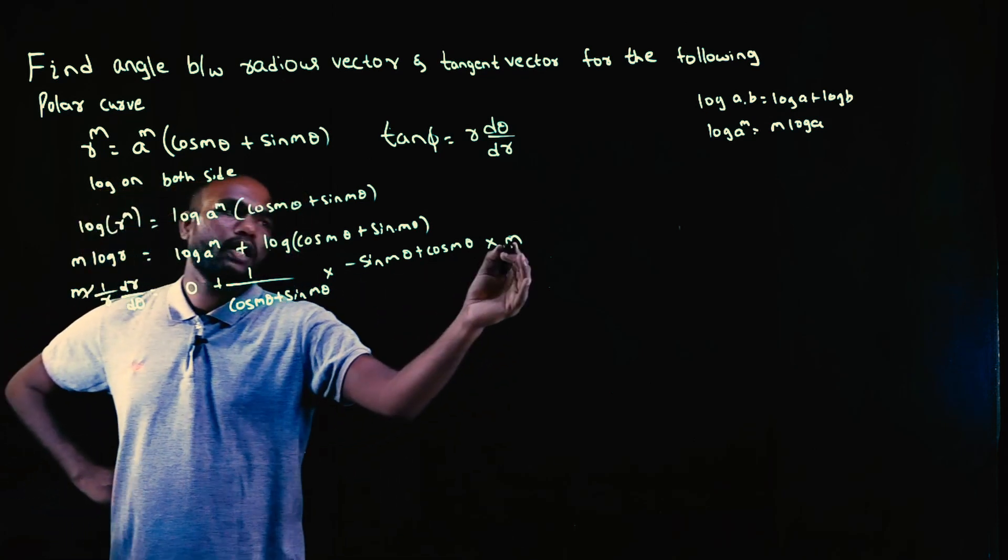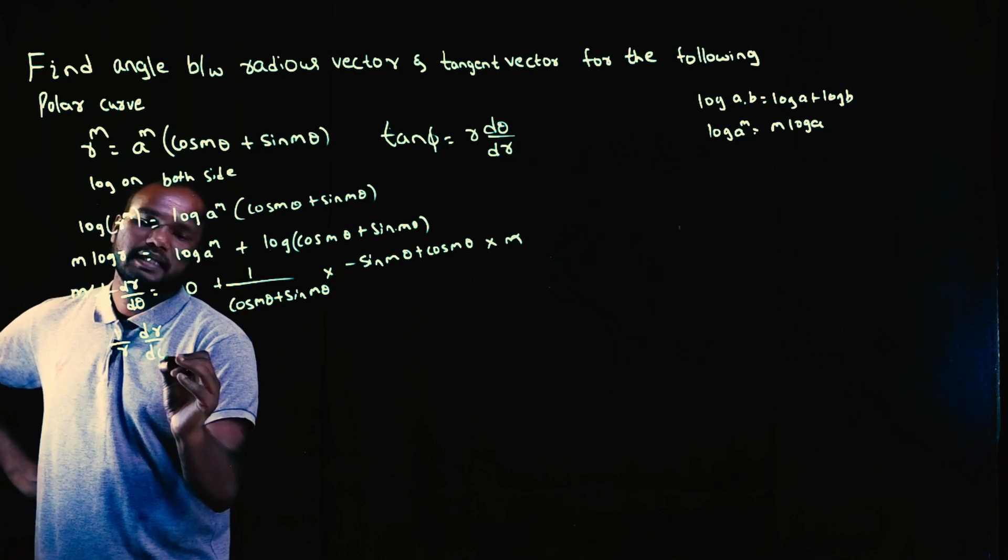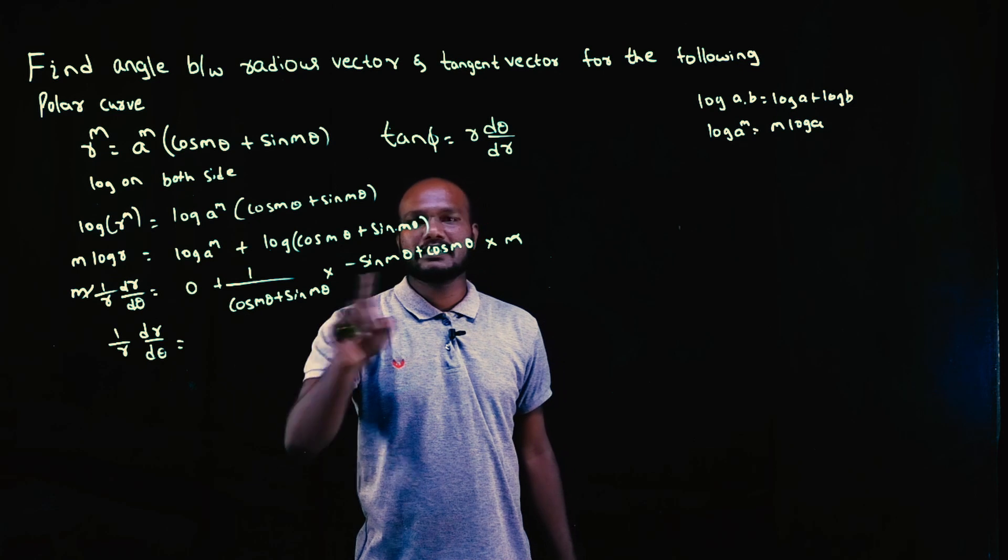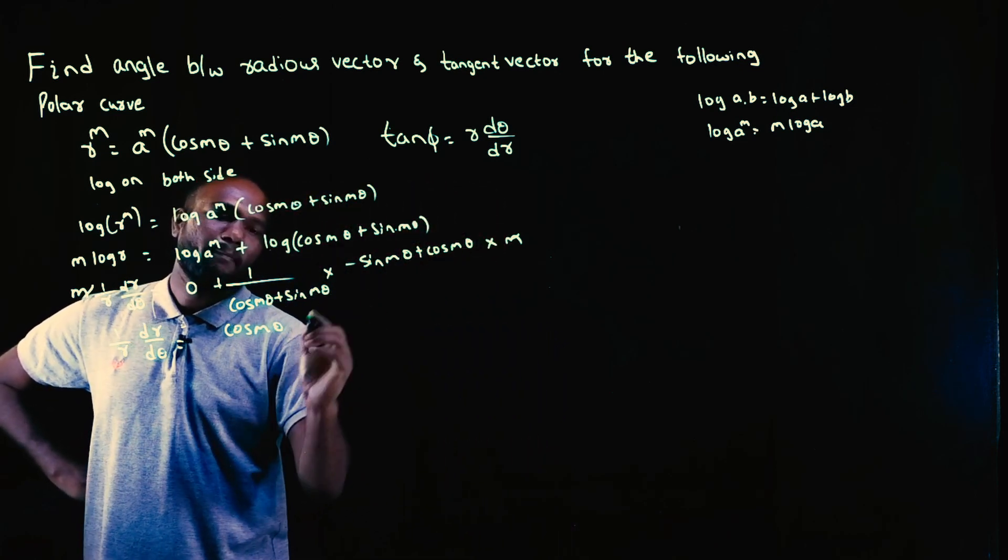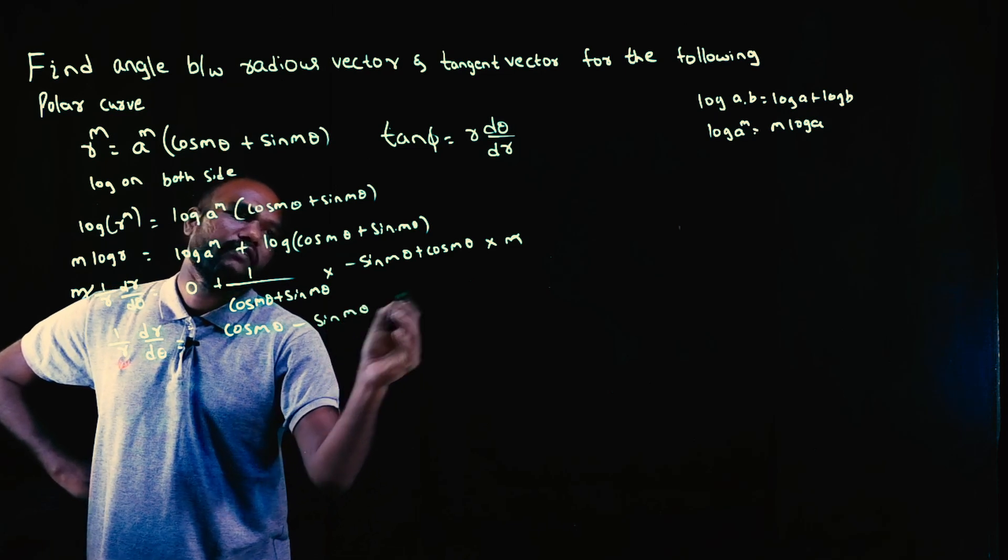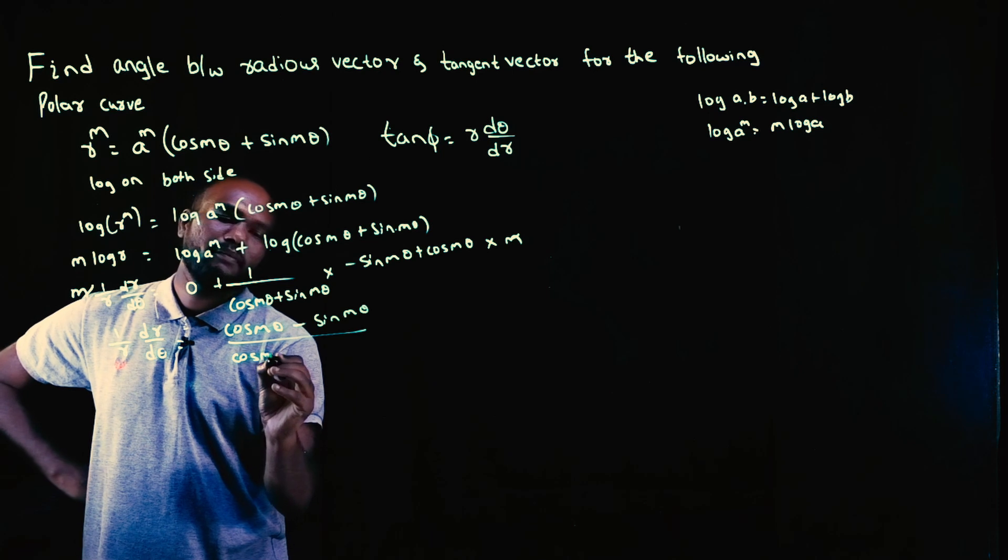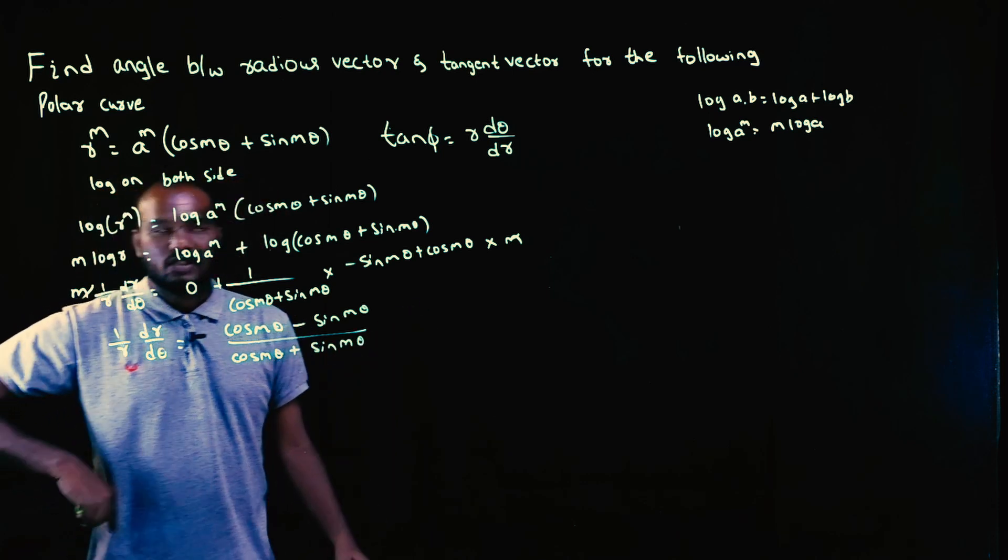Taking out the m terms, I get (1/r)(dr/d theta) equals m times (cos m theta - sin m theta)/(cos m theta + sin m theta). But I do not want 1/r. I need r times d theta/dr.